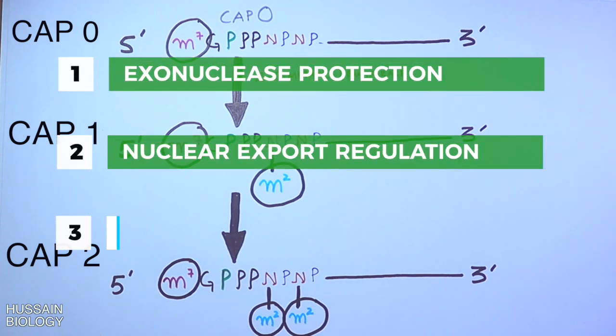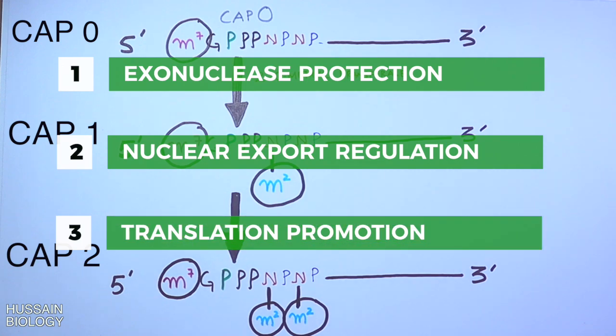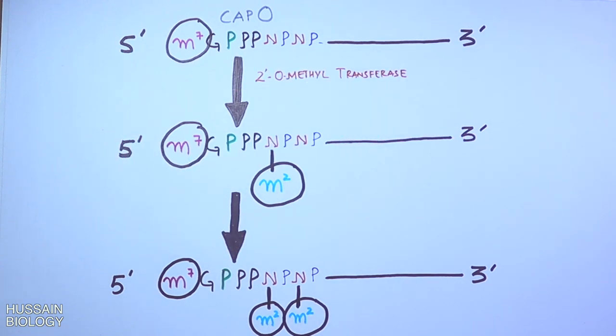Moreover, one thing to remember is that this cap has diverse functions, but the major functions include exonuclease protection, nuclear export regulation, and translation promotion as it aids in ribosome binding. This is all about 5 prime capping or mRNA capping and its modified structures. In the next video we will be discussing its mechanism at the molecular level with structural diagrams.